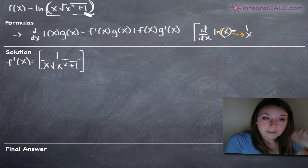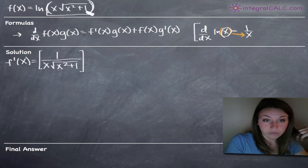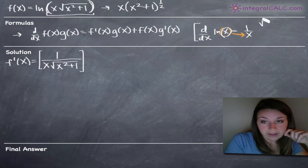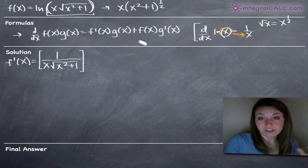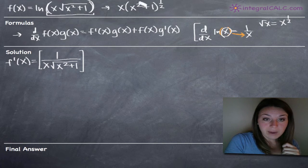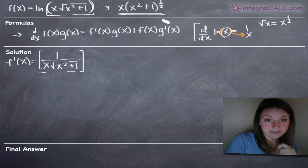The derivative of x times the square root of x squared plus 1 will be found using the product rule. First, let's convert x times the square root of x squared plus 1 to x times x squared plus 1 to the 1/2, since the square root of x squared plus 1 equals the quantity x squared plus 1 raised to the 1/2 power. We haven't changed the function, only the way it's written.